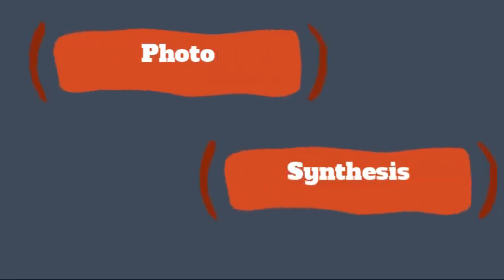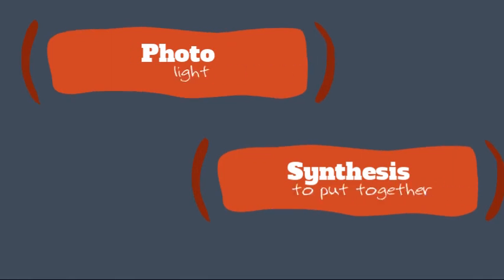Hello, my name is Miss Megan and today we are going to be learning about photosynthesis. Photo means light and synthesis is to put together. For this lesson you need three simple materials: a pencil, a blank piece of paper, and crayons.